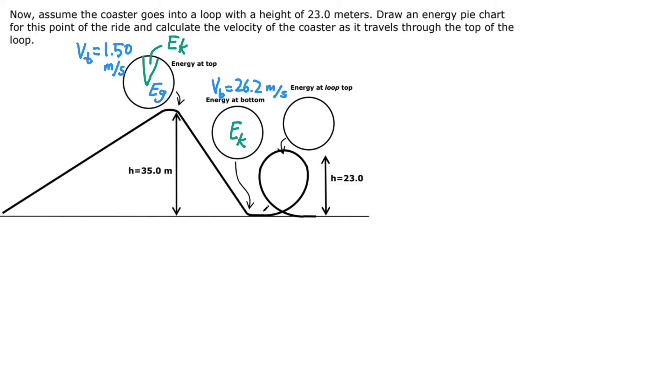As it gains height on the way up, that kinetic energy wedge is going to start to get smaller because the gravitational potential energy wedge is going to be increasing. If we wanted to analyze the speed of the cart as it goes through the loop at a height of 23 meters, we can do that. Let's again represent the energy breakdown with an energy pie chart.